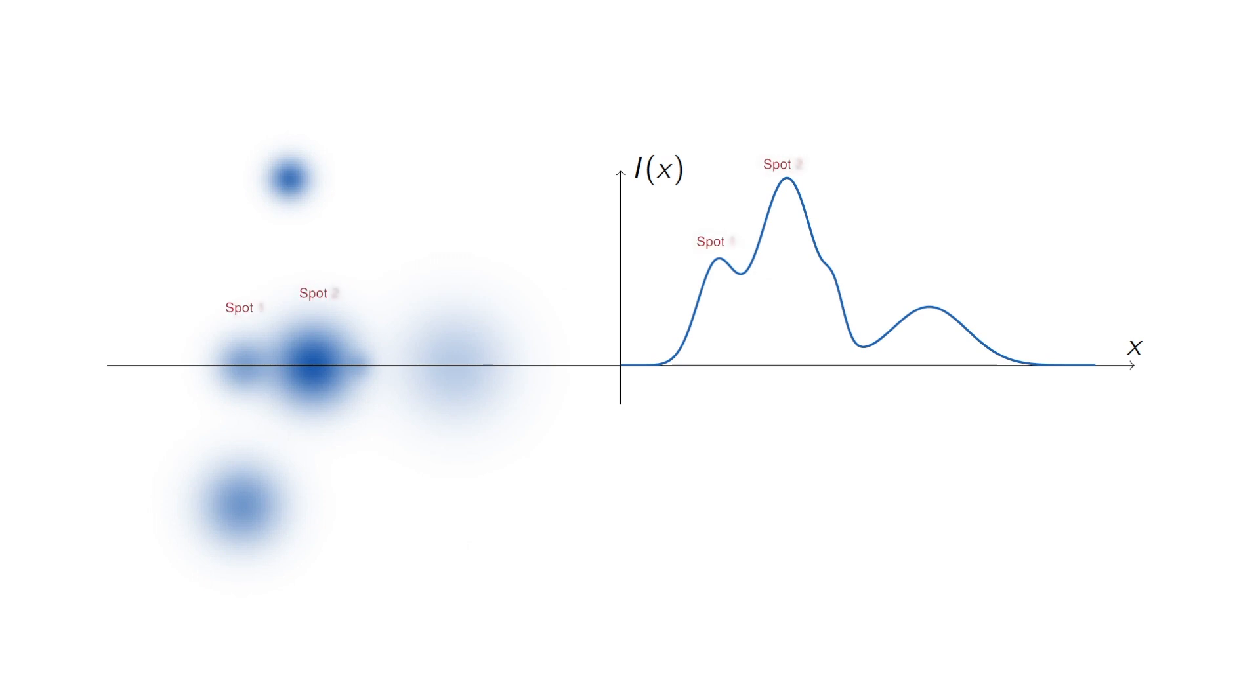In order to understand why the problem of counting these spots is difficult using an automated method, let's consider an example of a commonly used spot counting method. In this case, the curve shows a cross-section of the luminosity of the spots going through these four spots in the center. You'll have spot one and two which give distinct peaks, spot four which is dimmer will also give a distinct peak, but spot three will be partially occluded by the second spot. A very common way to count spots is to simply threshold the image. We apply a thresholding level and everything above this level is counted as a spot.